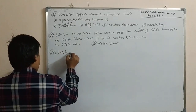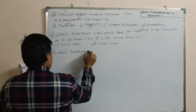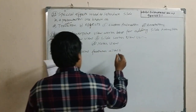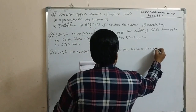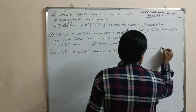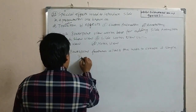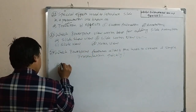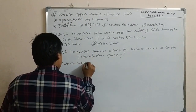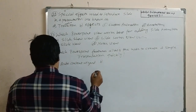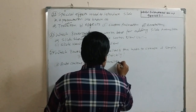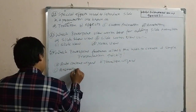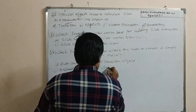Next question is about the shape of PowerPoint: which PowerPoint feature allows the user to create a simple presentation quickly? Option A, auto content wizard. Option B, transition wizard. Option C, animations. Option D, chart wizard.